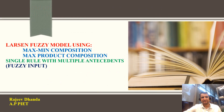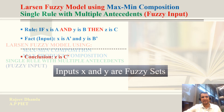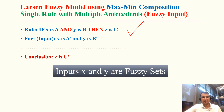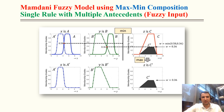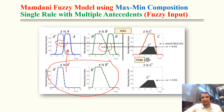For single rule with multiple antecedents: there is one rule — if X is A (first antecedent) and Y is B (second antecedent). We superimpose the inputs and get degree of compatibility 0.58 for X and 0.36 for Y. Using max-mean composition, the minimum of 0.58 and 0.36 is 0.36, so we scale down the output by 0.36. That is the final output.